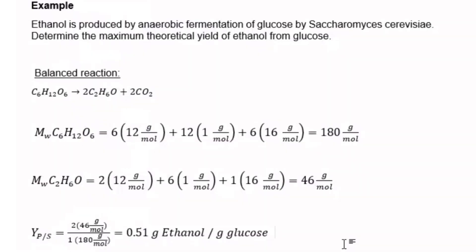We take two moles of ethanol's molecular weight divided by one mole of glucose to get an answer of 0.51 grams ethanol per gram of glucose. I really hope this makes sense. Thank you so much for watching. Till next time, bye!